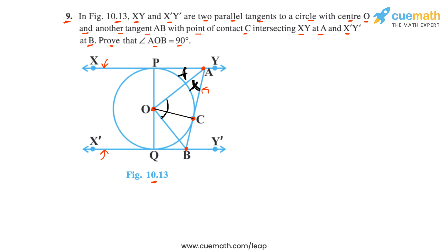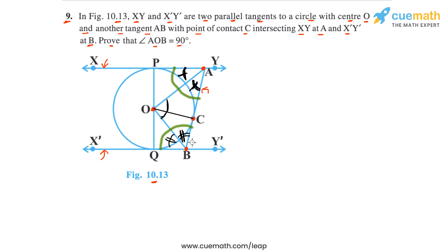Similarly, it's easy to show that triangle OBQ is congruent to triangle OBC, and therefore angle QBO is equal to angle CBO. Now observe angles PAC and QBC carefully in the figure. The sum of these angles is equal to 180 degrees because they are co-interior angles.